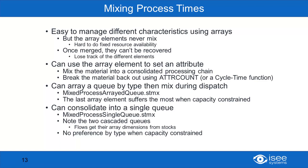Finally, I want to show an example of mixing process times. This is a way to manage different characteristics — we're going to use arrays to do this, where elements in arrays never mix. And so if we're looking at a system where there's a constraint where things have to go through a common resource, we're going to use that by starting with arrays and then collapsing those arrays. The trouble with just arrays is once they're merged they can't be recovered, but by using the array element as an attribute we can recover which array element it was by using the attribute count or a cycle time function.